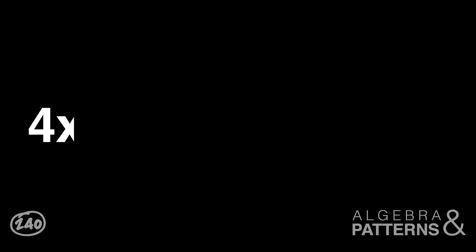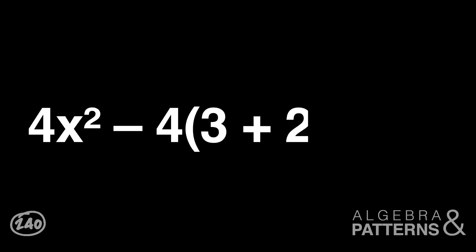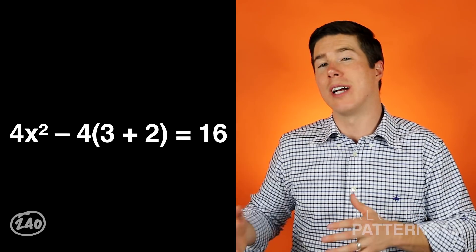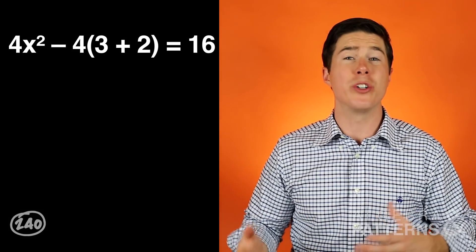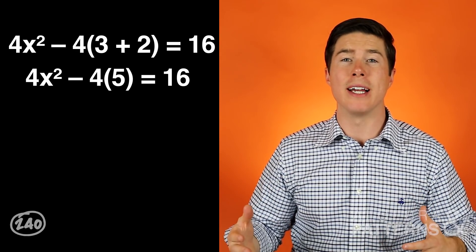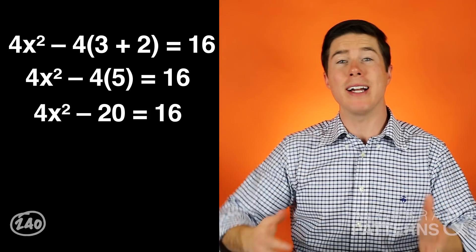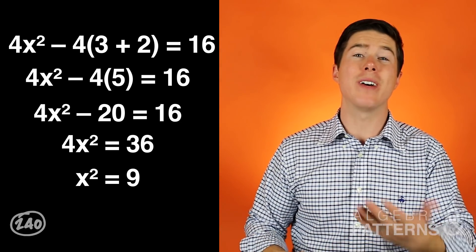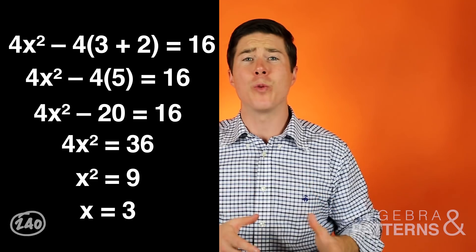Solving for x is pretty straightforward. The test will give you an equation and then you have to solve for x. For example, the test might give you an equation like 4x squared minus 4 times (3 plus 2) equals 16, and you have to solve for x. In this equation, you would simplify it as much as you can, balance the equation, and you would find that x equals 3.